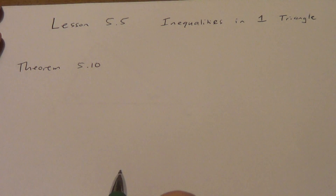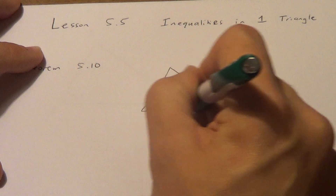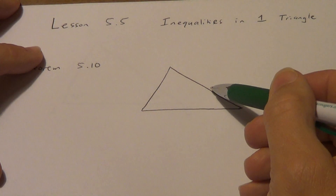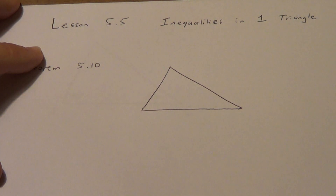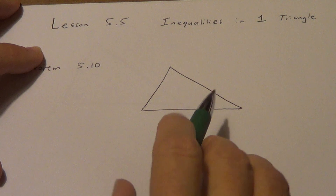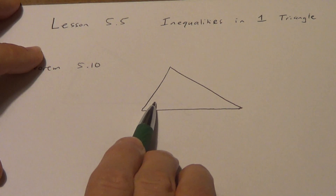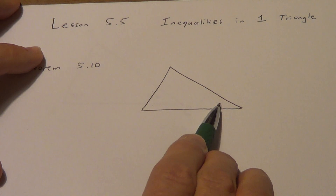Theorem 5.10 says: if one side of a triangle is longer than another side, then the angle opposite the longer side is larger than the angle opposite the shorter side. So if this side here is longer than this other side, we work across to our angles and we can say that one angle is bigger than the other.